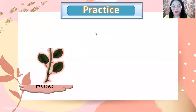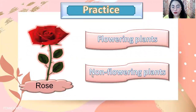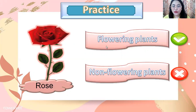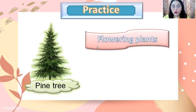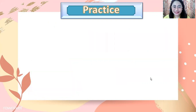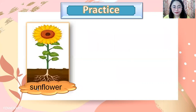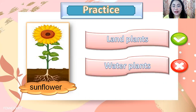Let's practice. Rose — flowering plants or non-flowering plants? The answer is flowering plants. Pine tree — flowering plants or non-flowering plants? The answer is non-flowering plants. Sunflower — land plants or water plants? The answer is land plants.